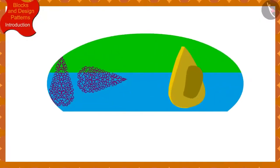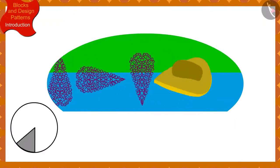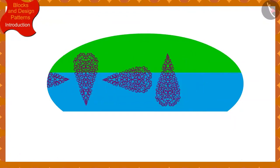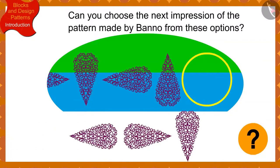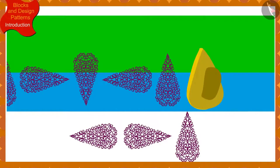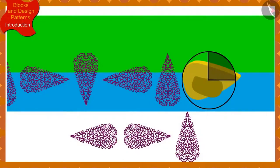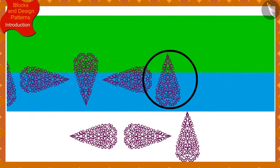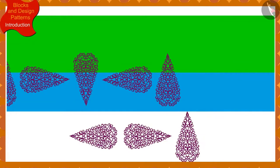Children, if Banno has made this design so far by rotating the block by a quarter in the clockwise direction every time, can you choose the next impression of the pattern made by Banno from these options? You may stop the video and think of the answer. Because Banno rotates the block a quarter in the clockwise direction every time, to make the next impression, we have to rotate this impression by a quarter in the clockwise direction. Among these options, this option will be the next impression.